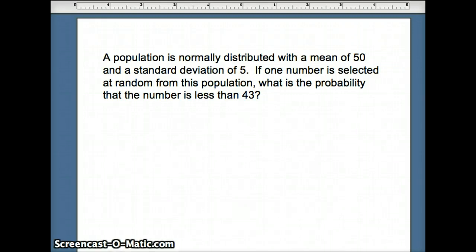So what do we know? The mean is 50, we'll call that mu. The standard deviation is 5, we'll call that sigma, because those represent parameters, characteristics of the population.